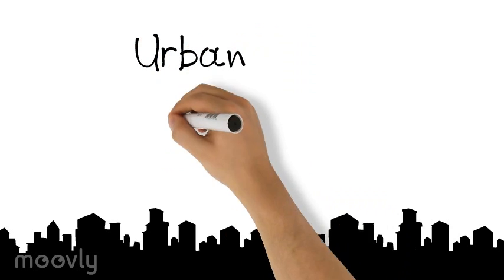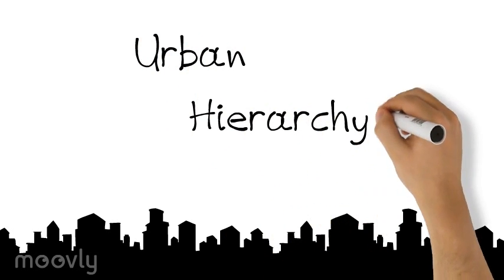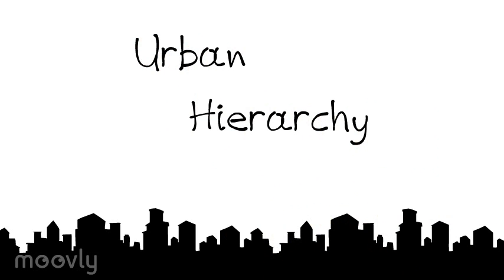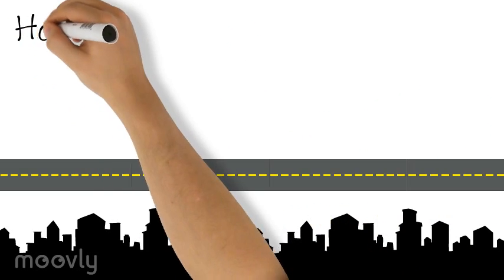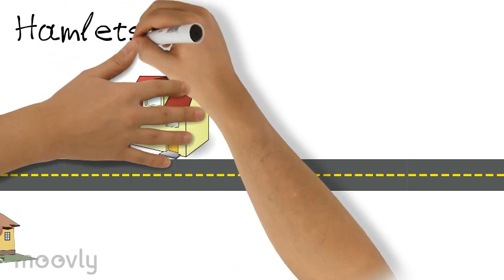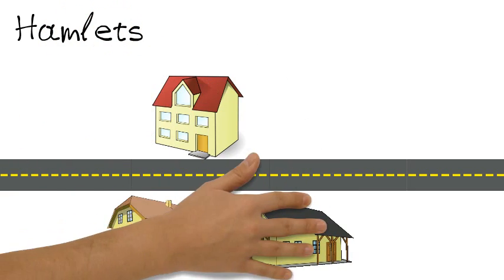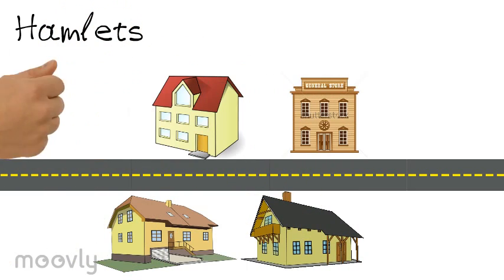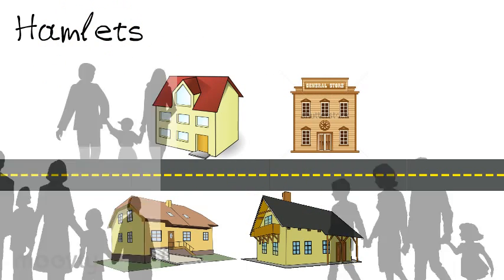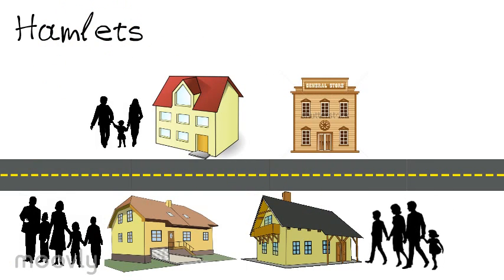Urban hierarchy. For a city to come about, it needs to start off small and get larger. A hamlet is the first step to becoming urbanized. Hamlets only include a few dozen people and don't offer a lot of services. They are clustered around a center, which is usually just a gas station or a general store.